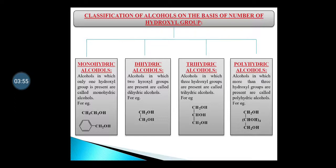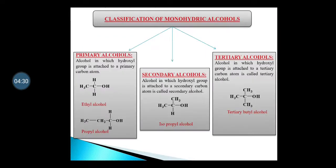Trihydric alcohols have three hydroxyl groups present. For example, glycerol has three OH groups. Polyhydric alcohols have more than three hydroxyl groups present. For example, sorbitol has six hydroxyl groups — that is more than three — so it is a polyhydric alcohol. We will study only monohydric and dihydric alcohols in detail.